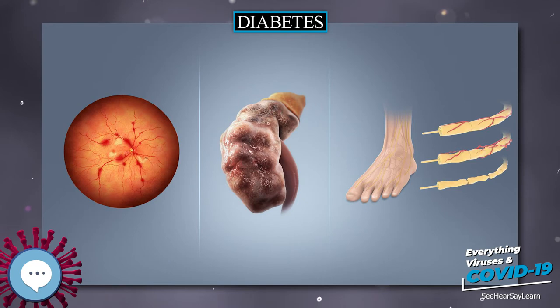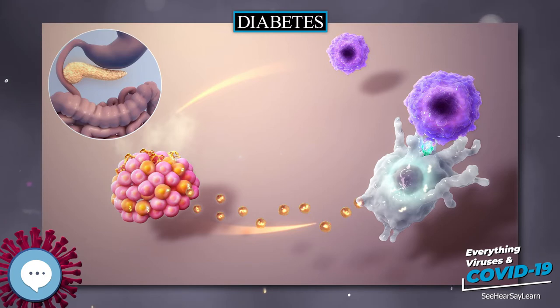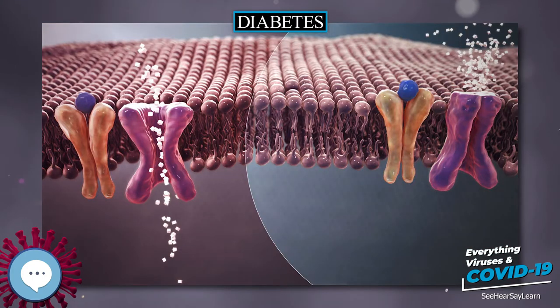Diabetes mellitus, commonly known as diabetes, is a group of metabolic disorders characterized by a high blood sugar level over a prolonged period of time.